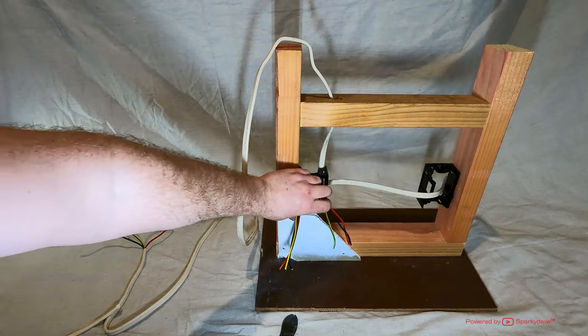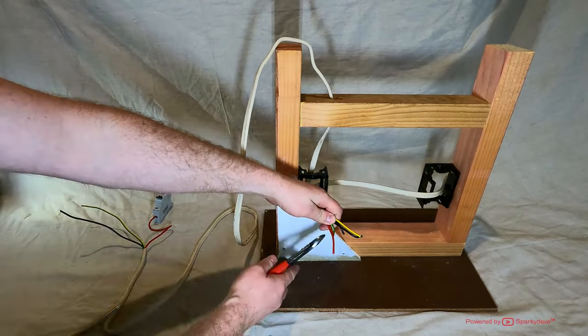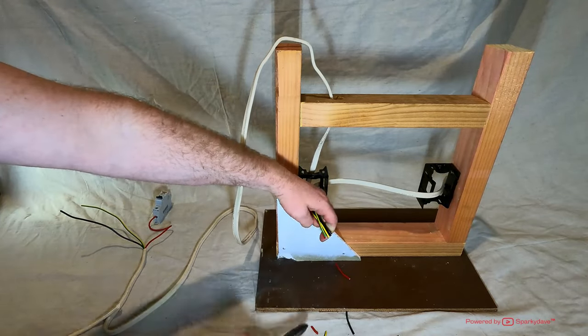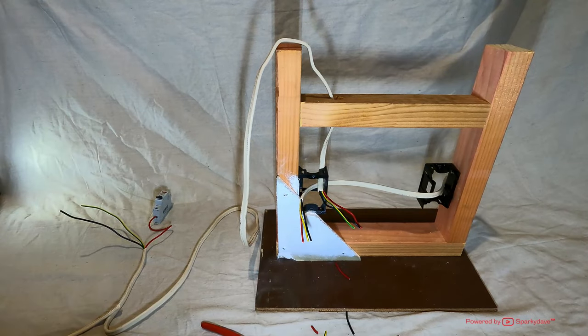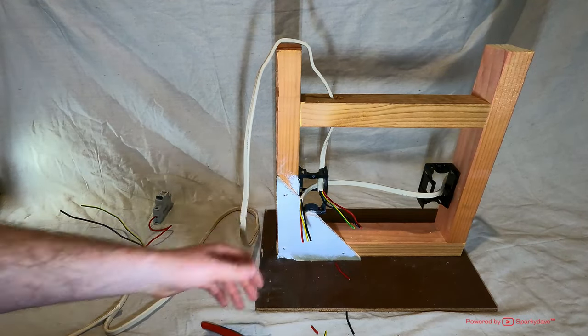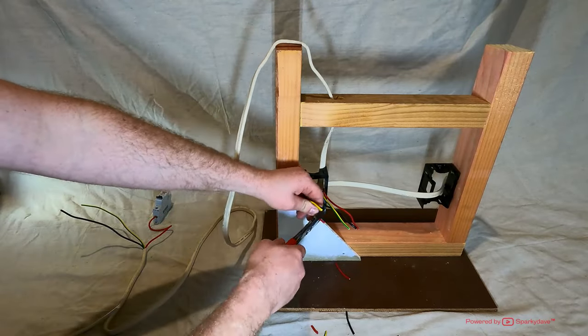And then we cut these two cables to the same length hanging outside of the socket. So you can see all the cores match up now. Now what we'll do is we'll strip them back about a centimeter and a half as explained in the last video. Now you've got them spread apart, we're going to be twisting the same colored cores with the same colored cores.